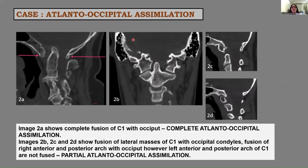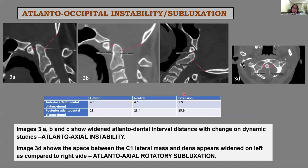This is a case of atlanto-occipital assimilation. Image 2A shows complete fusion of C1 with the occiput, suggestive of complete atlanto-occipital assimilation. Images 2B, 2C, and 2D show fusion of lateral masses of C1 with the occipital condyles and fusion of the right anterior and posterior arch with the occiput. However, there is no fusion of the left anterior and posterior arches of C1, suggestive of partial atlanto-occipital assimilation.